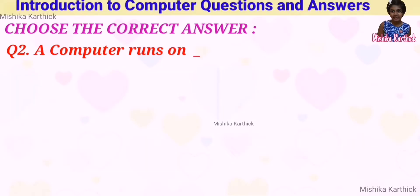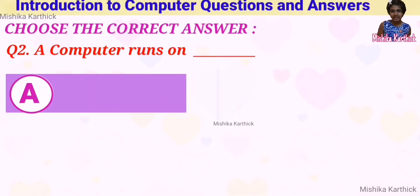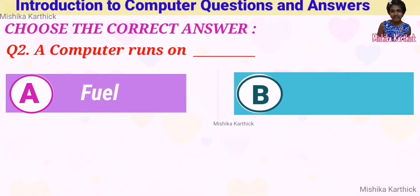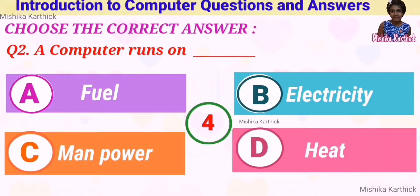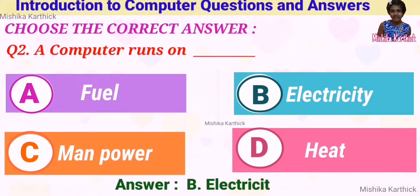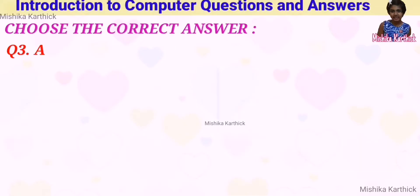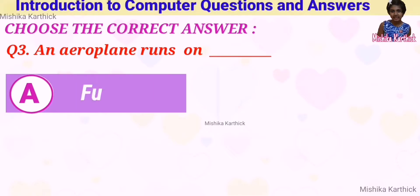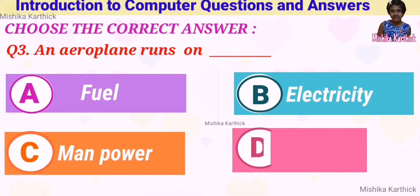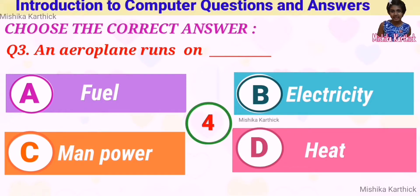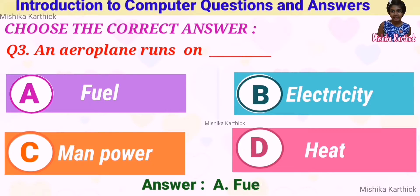Question 3: an aeroplane runs on dash. Options: A. Fuel, B. Electricity, C. Manpower, D. Heat. Answer: A. Fuel. Question 4: a machine which runs on manpower. Options: A. Fridge, B. Washing machine, C. Car, D. Rickshaw. Answer: D. Rickshaw.